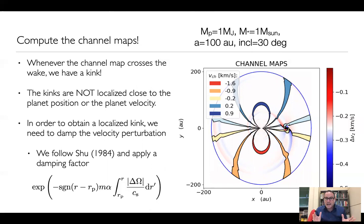However, as you can see here, the kinks are not localized, they're not localized close to the planet in terms of position, not even in terms of velocity, but are spread around the whole disk. This is because the wake doesn't vanish even if you move far away from the planet. So if you want to have a localized kink, basically we have to damp the velocity perturbation away from the planet. And we do that by following again another old paper by Shu. So we apply this damping factor that is shown here, that obviously depends on the dissipative terms that we are trying to mimic here, and in particular on viscosity.